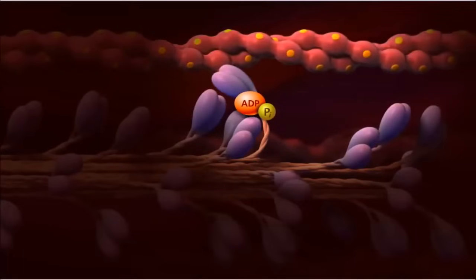An action called the power stroke is triggered, allowing myosin to pull the actin filament toward the M-line, thereby shortening the sarcomere.